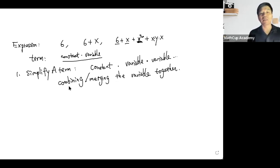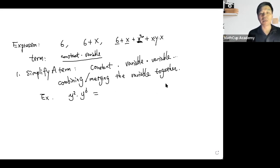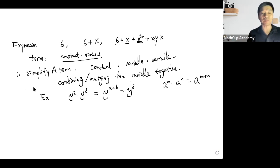This is a bit abstract, but examples make it very easy to understand. For example, how do we simplify y squared times y to the power 6? Using the power property — a to the power m times a to the power n equals a to the power m plus n — this equals y to the power 2 plus 6, which is y to the 8. Inside one term, we combine the same variable together by adding the exponents.